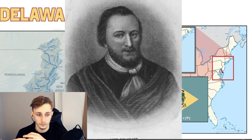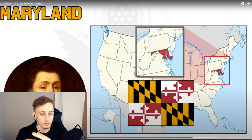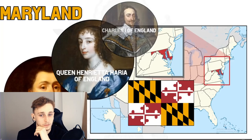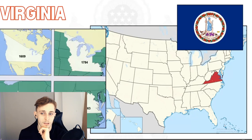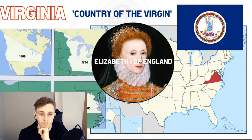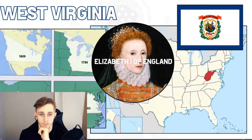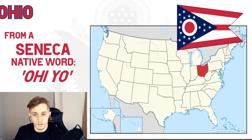Maryland was named by George Calvert after Queen Henrietta Maria, wife of King Charles I of England, although some Catholic scholars believe it was named after Mary, the mother of Jesus. Virginia was the first British colony in continental North America — its name meant 'country of the virgin,' after Elizabeth I of England, known as the Virgin Queen because she never married. West Virginia has the same origin, with 'West' referring to the western territories of the formerly larger Virginia state after separation. Ohio gets its name from a Seneca native word meaning 'large creek.'